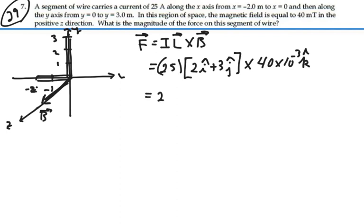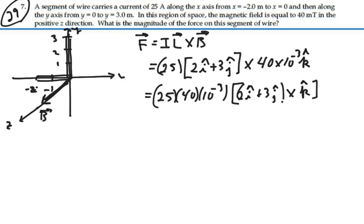So from this, we're going to have 25 times 40 times 10 to the minus 3, and then we're left with our cross product of 2i plus 3j crossed with k. Now, that's 2 there.